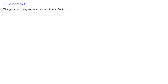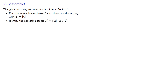This gives us a way to construct a minimal finite automaton for our language. Find the equivalence classes for L — these are the states, where our initial state is going to be the equivalence class of the empty string. Identify the accepting states: those will be the equivalence classes where x is in our language. And we'll construct the transition function delta applied to the equivalence class of x when the next symbol is y as the equivalence class of xy, for all y in our alphabet. Let's try it out.